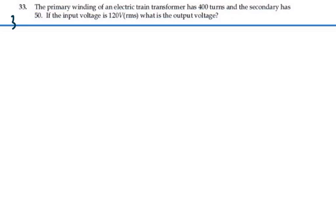Here's problem 33. The primary winding of an electric train transformer has 400 turns and the secondary has 50. If the input voltage is 120 volts RMS, what is the output voltage?